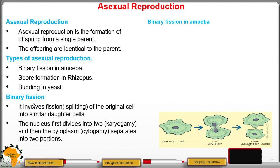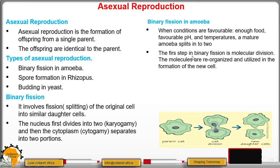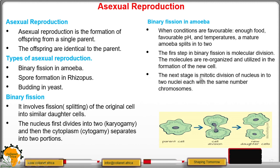How does binary fission occur in amoeba? It occurs when conditions are favorable — that is, enough food, favorable pH, and temperatures. That is when a mature amoeba splits into two. The first step is molecular division, where molecules are rearranged and used in the formation of new cells. The next stage is mitotic division of the nucleus into two, and each has the same number of chromosomes.